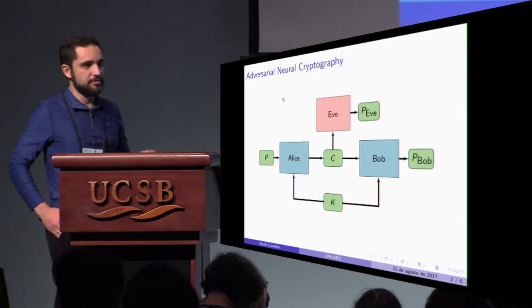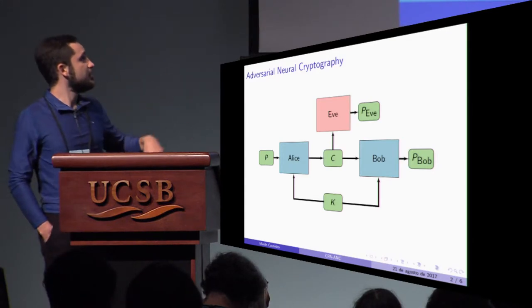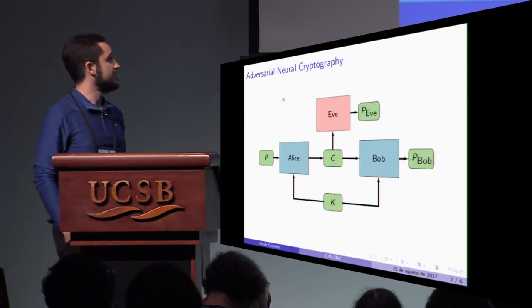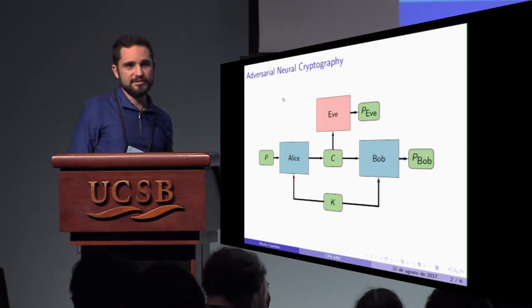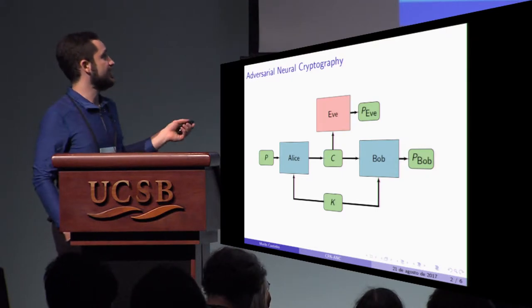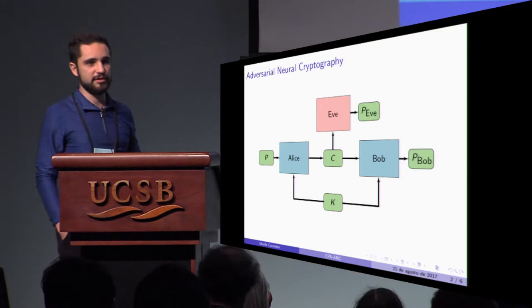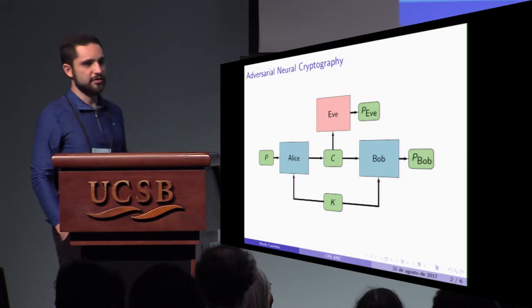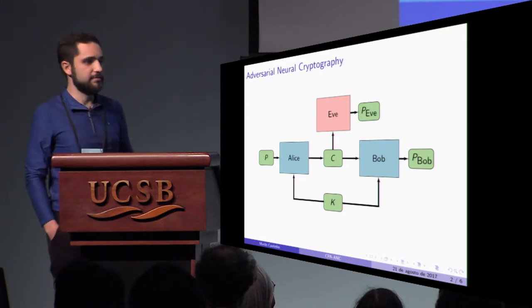And Alice and Bob had to communicate with each other and Eve tried to break the system. So I was a bit disappointed with the paper because in the end they didn't actually show the encryption algorithm that Alice and Bob had found.